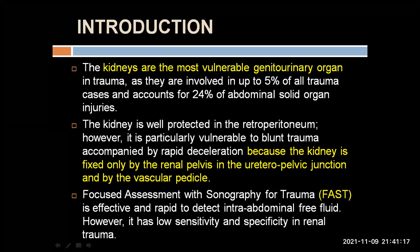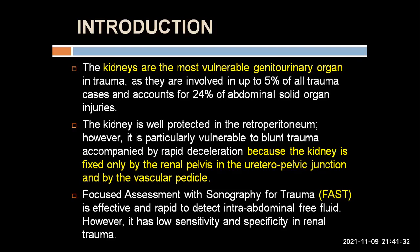In the fast-moving world, we know that the occurrence of road traffic accidents and blunt trauma to abdomen is way more increasing. Though there have been many papers previously that have dealt with CT evaluation of solid organ injury, especially abdominal organs, this study was done to throw more focus on uro-trauma and in particular renal trauma. Because the kidneys are the most vulnerable genitourinary organ involved in trauma, they constitute up to 5% of all trauma cases and account for about 24% of abdominal solid organ injuries.